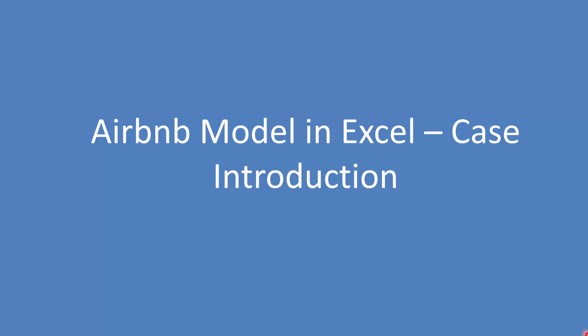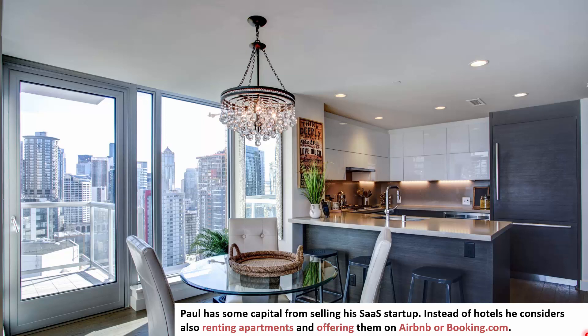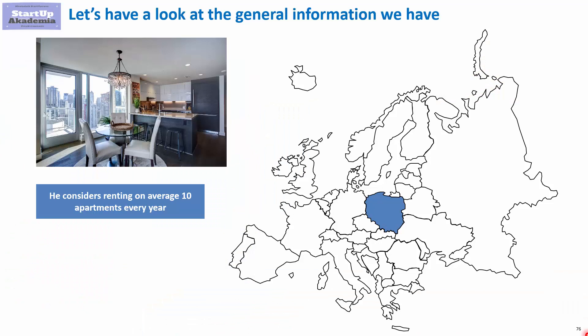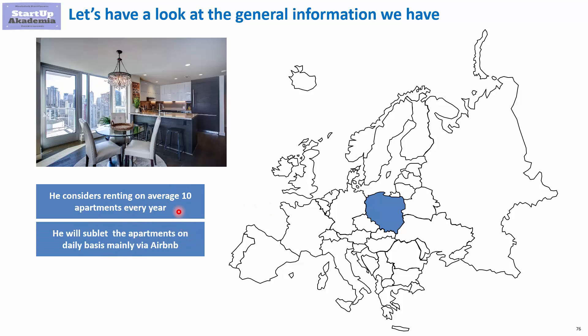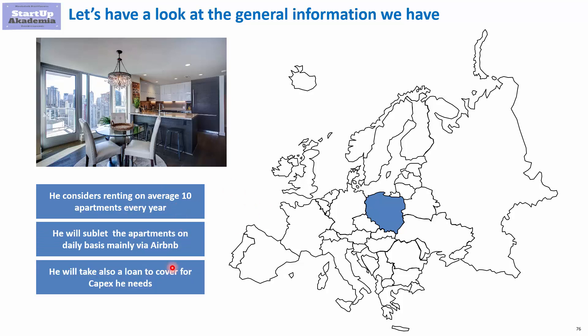Let's have a look at how we can model an Airbnb business in Excel. We're going back to Paul, who has some capital from selling his startup. Instead of hotels, he's considering renting apartments and offering them on Airbnb or Booking.com. He's not buying the apartments but renting them from other people and subletting to guests on a nightly basis. We'll help him estimate profit and cash generation over the next 12 years.